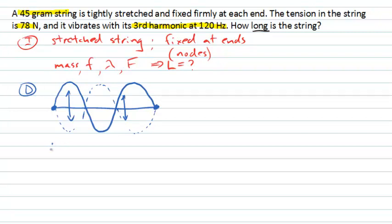Importantly, if my string has a length L along here, this diagram of the third harmonic clearly shows me that I actually get one half-wavelength, two half-wavelengths, three half-wavelengths along the length. So I get three lots of lambda over two, that's my half-wavelength. That equals the length of the string.